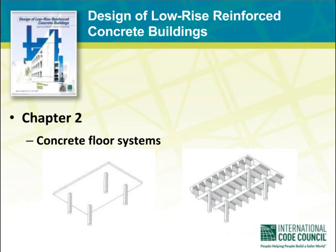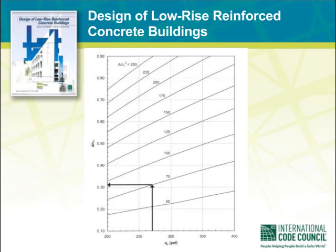Chapter 2 summarizes floor systems commonly used in concrete buildings. Guidance is provided on the advantages of various systems and practical framing layouts. Information on the selection of economical floor systems for various span and gravity load conditions is also provided, along with methods to determine preliminary member sizes. Shown on your screen is a design aid from Chapter 2 that can be used to quickly obtain a preliminary slab thickness for a flat plate based on two-way shear requirements and an edge column, including the effects from unbalanced gravity moments.